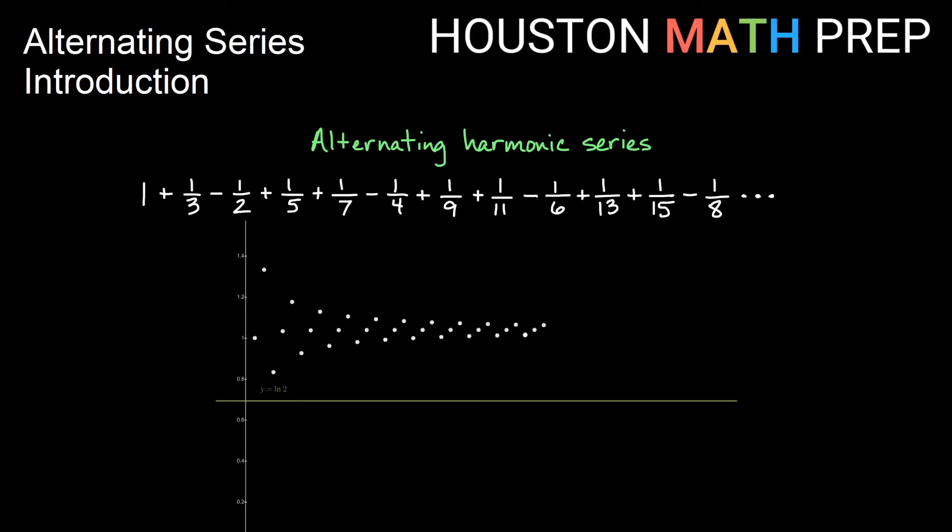And so we get this expression that seems to be getting closer and closer to some number, looks like a little bit bigger than 1, and it is. And it turns out if we add it up this way, we get closer and closer to the number 3/2 ln 2, which is just a little bit bigger than 1. So just by rearranging and sort of writing out the list of partial sums and the pattern of where it goes, you can see that we end up somewhere else.